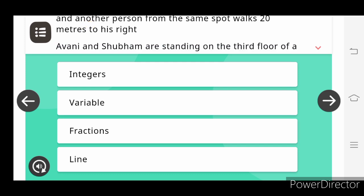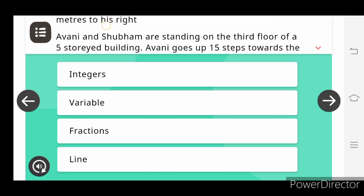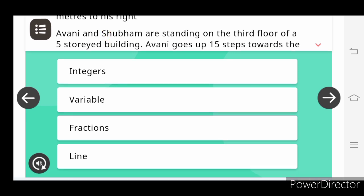Avani and Shubham are standing on the third floor of a five-story building. Avani goes up 15 steps. The right option is integers.